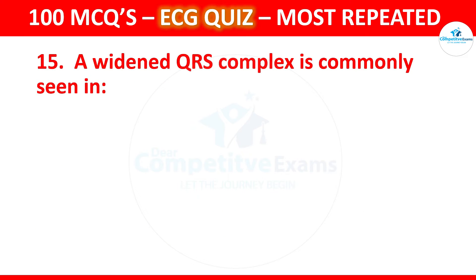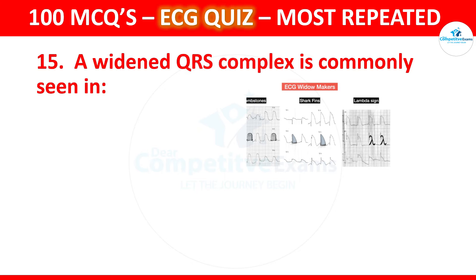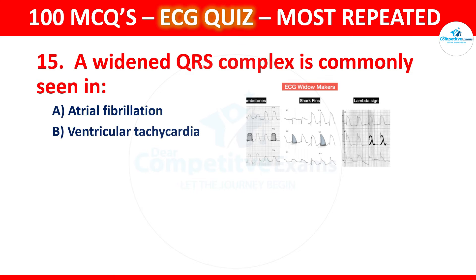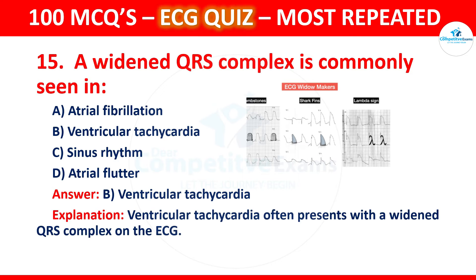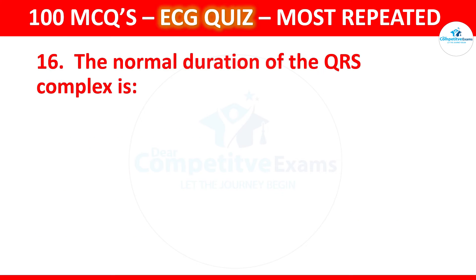Question 15: A wide QRS complex is commonly seen in which condition? Options are atrial fibrillation, ventricular tachycardia, sinus rhythm, or atrial flutter. The correct answer is ventricular tachycardia. Ventricular tachycardia often presents with a wide QRS complex on the ECG.